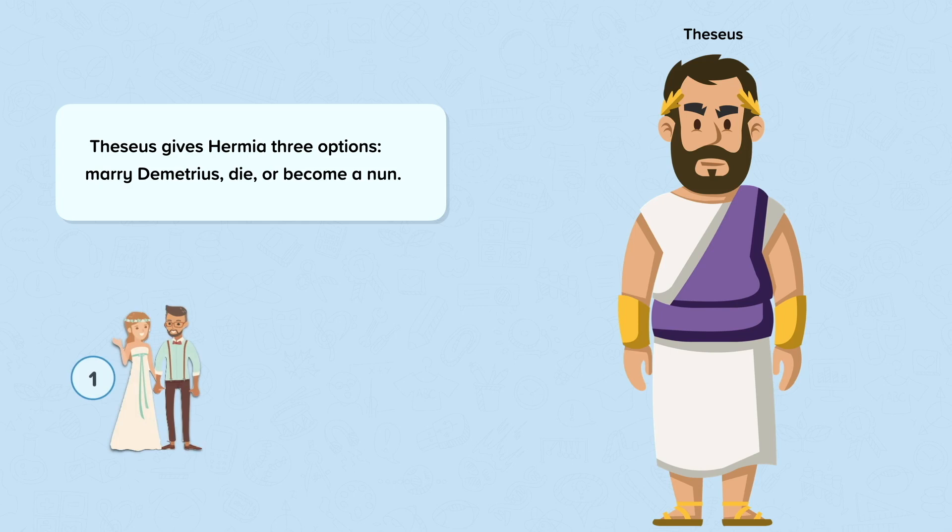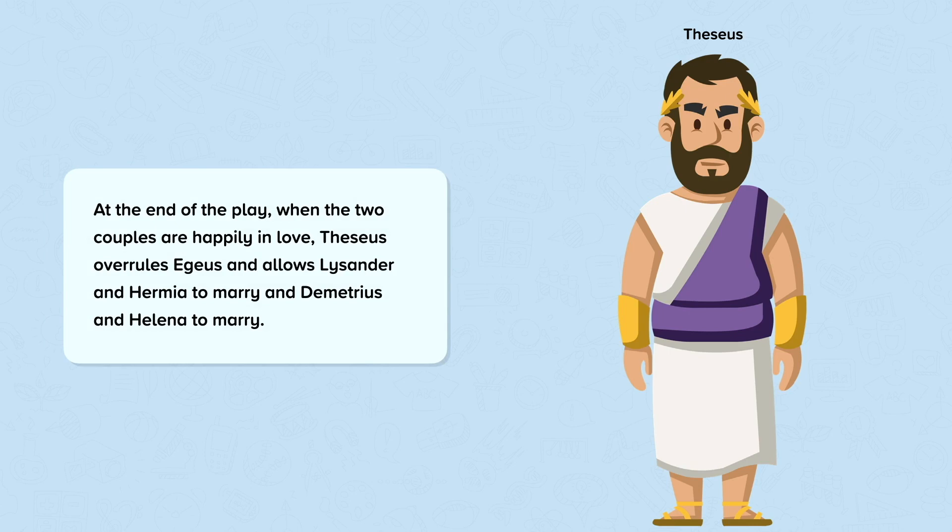At the end of the play, when the two couples are happily in love, Aegeus is still demanding Lysander and Hermia be punished, but Theseus overrules Aegeus and decides to allow Lysander and Hermia to marry, and Demetrius and Helena to marry.